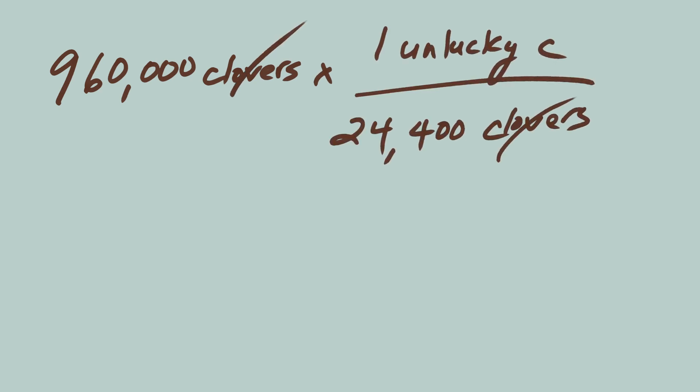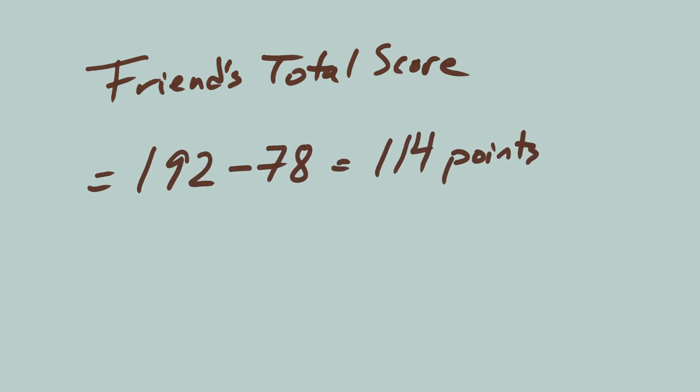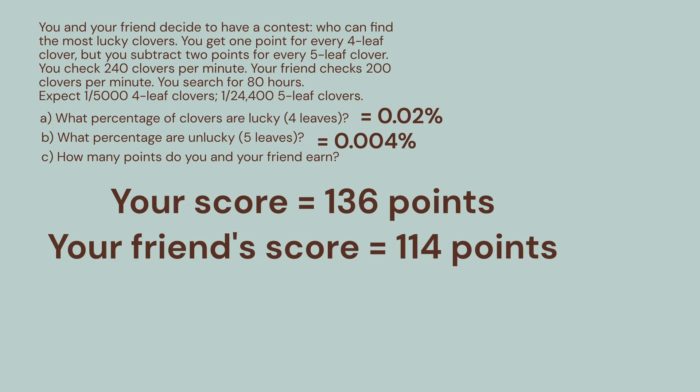He'll also probably find some unlucky clovers. 960,000 clovers times 1 unlucky clover per 24,400 clovers, which equals 39.34. Round down to 39. It's two points lost for each unlucky clover, which is 39 times 2 equals 78. Your friend's total is 192 minus 78 equals 114 points.